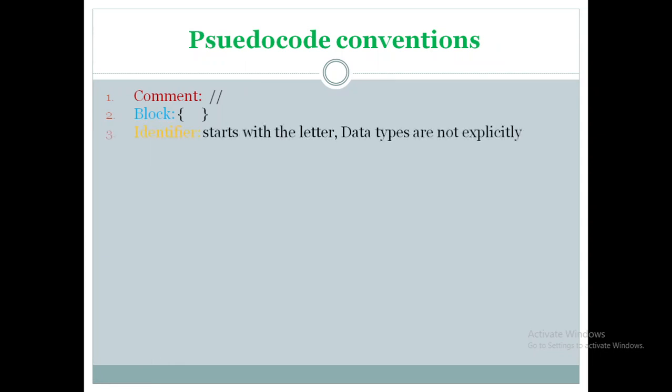The third convention is identifiers. An identifier is a name given to a variable, function, or class. In C programs, there are six rules to assign a valid identifier name: it should not be a keyword, cannot start with a number, should start with an alphabet followed by any characters, and cannot use special characters. The same rules apply here. When defining an identifier, it starts with a letter, and the data type is understood implicitly.